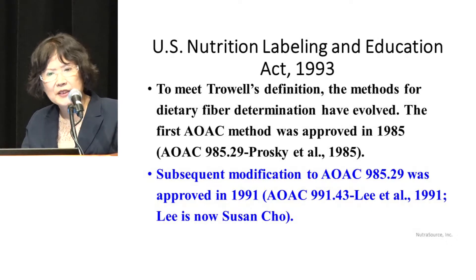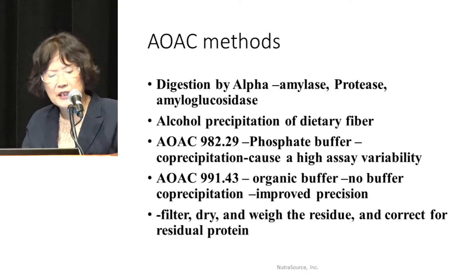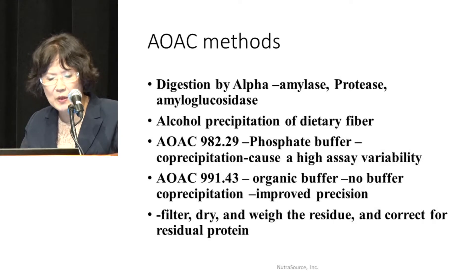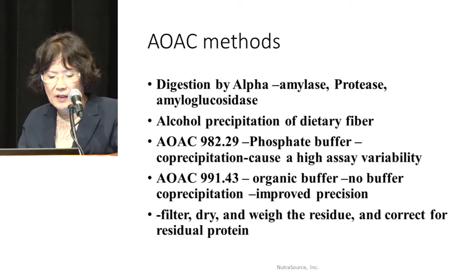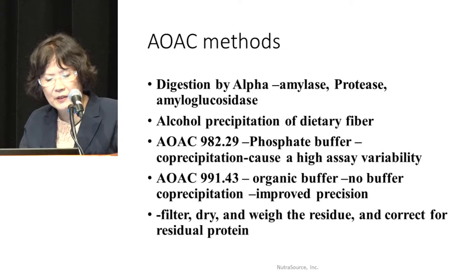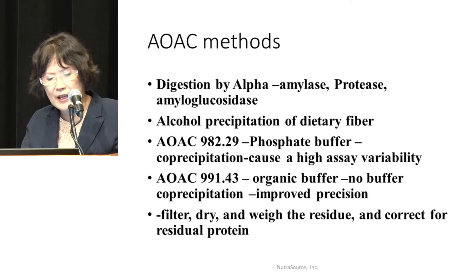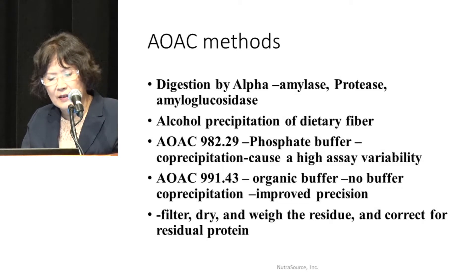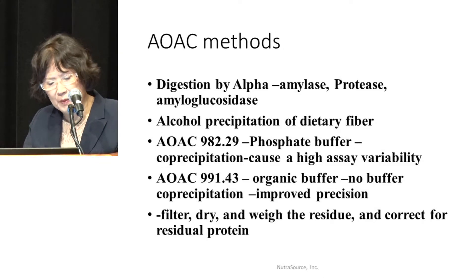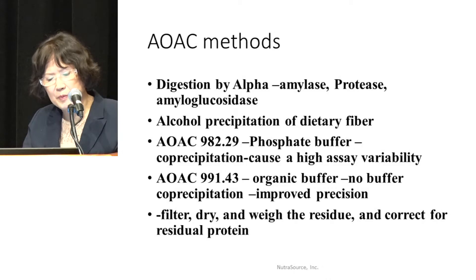I want to briefly go over the principle of the AOAC method. Both methods use enzymatic digestion. The sample goes through a series of digestions by alpha-amylase, protease, and amyloglucosidase. We then add four parts of ethanol to precipitate soluble fiber. The precipitate is filtered, dried, and weighed for residue, and corrected for residual protein. AOAC 985.29 uses phosphate buffer, but phosphate buffer co-precipitates with soluble fiber. AOAC 991.43 uses organic buffer and has less variability than AOAC 985.29.